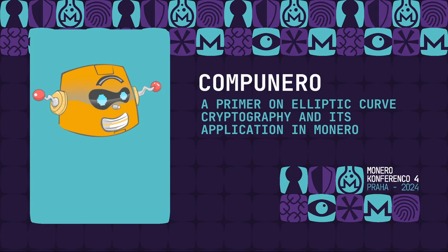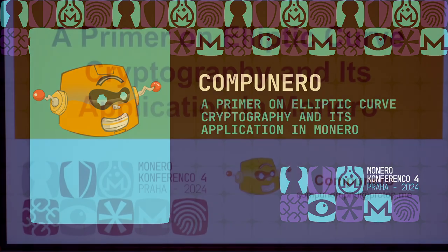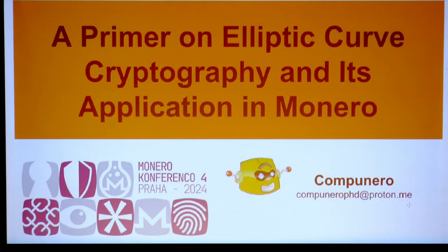Their experience in both tech companies and academia led them to focus on cloud security, machine learning, behavioral analytics, and now to work on private cloud management. This talk will take you from the basic principles of asymmetric cryptography to the ways elliptic curves are applied in various cryptographic mechanisms. Jay, the stage is yours.